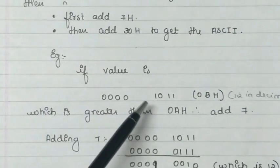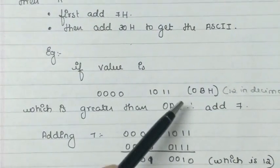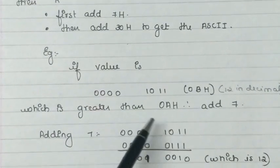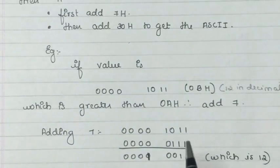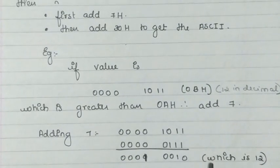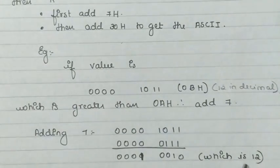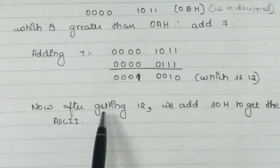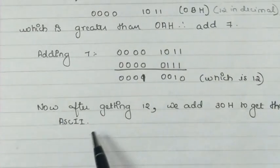Example, let us consider the value 0bh. 0bh is written in binary like this which is greater than 0ah. Therefore, we have to add 7 to 0bh. Adding 7 to 0bh will result in this number that is nothing but 12h in decimal. Now, after getting 12h, we add 30h to get the ASCII code.